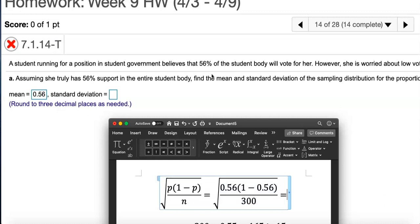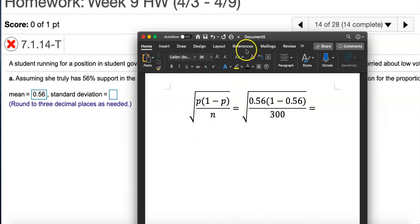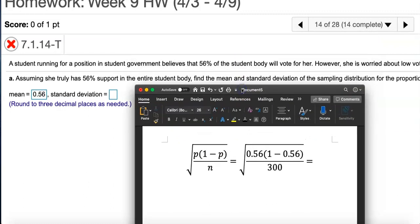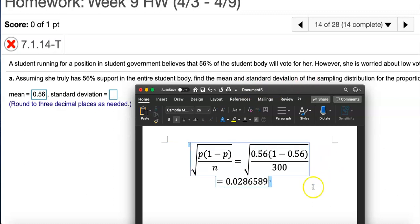Remember P is 0.56, one minus 0.56 is getting multiplied, and we're dividing by n—remember she said 300 students. Type this in your calculator and see if you can get the standard deviation. Square root of 0.56 times one minus 0.56 and you divide that by 300.